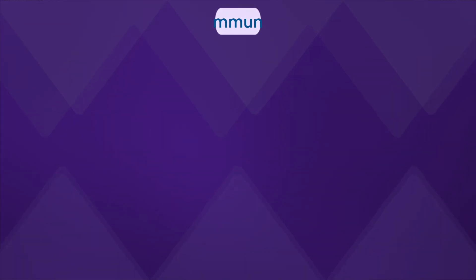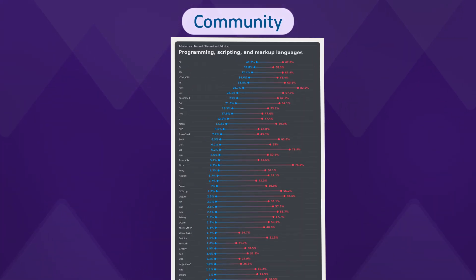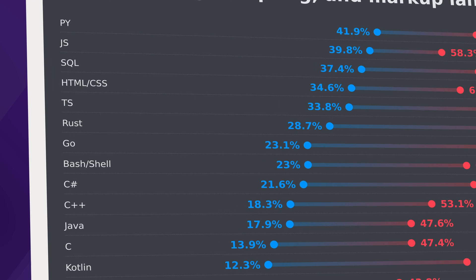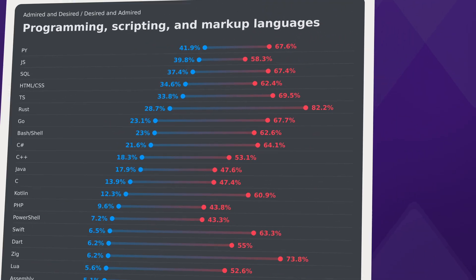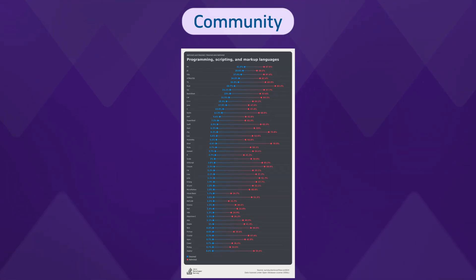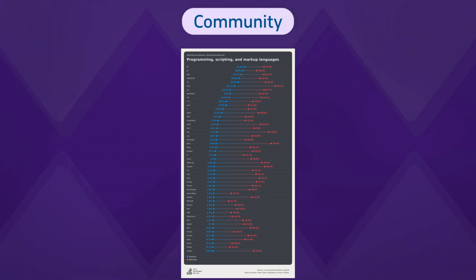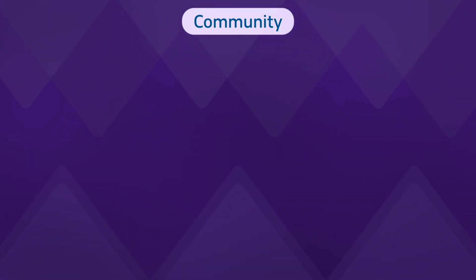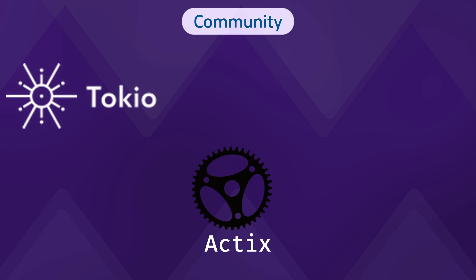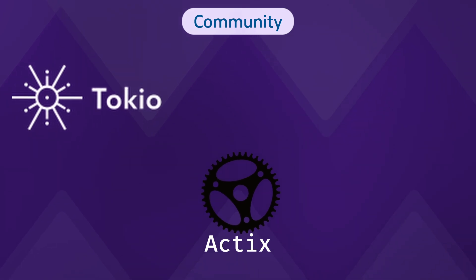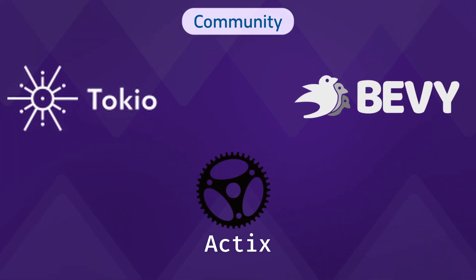And finally, the Rust community is exploding. Just in the last few years, Rust has become one of the most loved languages, according to the Stack Overflow developer surveys. The ecosystem is growing rapidly too, with tons of libraries and frameworks like Actix for web development, Tokio for async programming, and Bevy for game development.